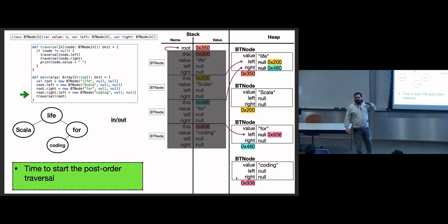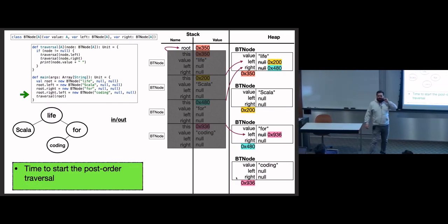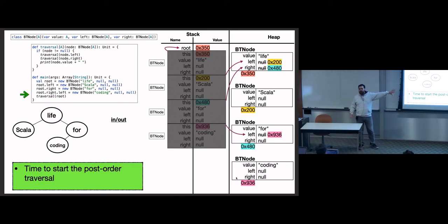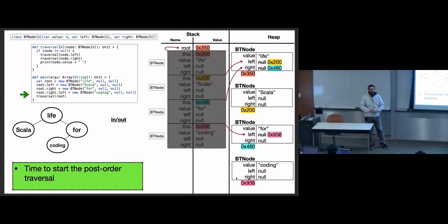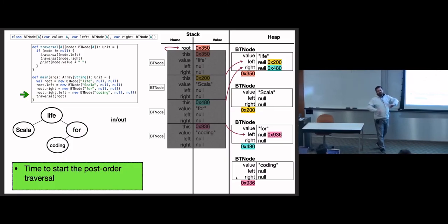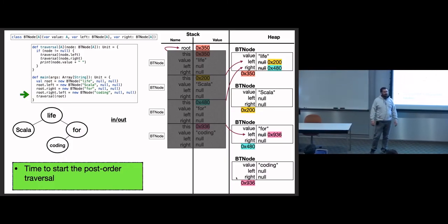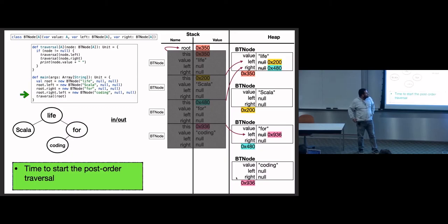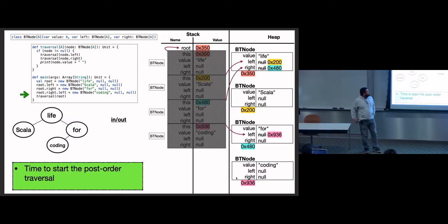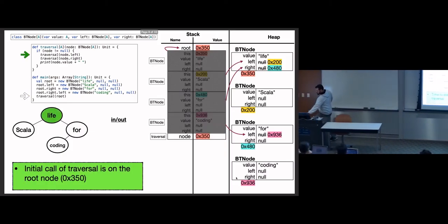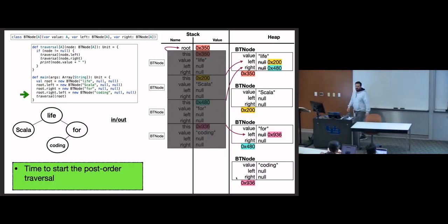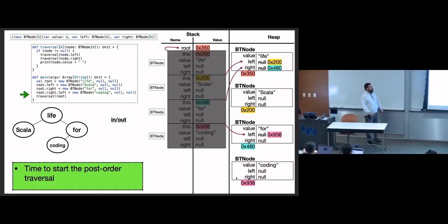The last line of code is going to take us the rest of the lecture to go through. I want to make sure everybody has time to look at the structure of the tree, because we're about to get into recursion with two recursive calls — we're going to have stack frames and references all over the place. That's going to take a while.